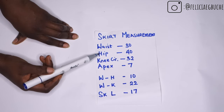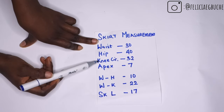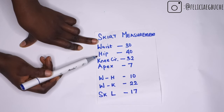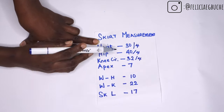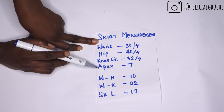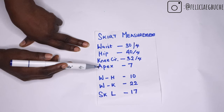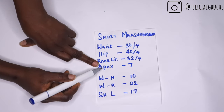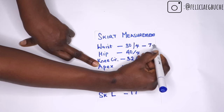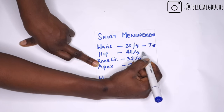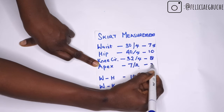The first three measurements go around the body, so we're going to be dividing those by four — those are your waist circumference, hip circumference, and knee circumference. The apex measurement, which is your nipple-to-nipple, we're going to be dividing that by two since it just goes from one nipple to the other. So this becomes 7.5 inches, this becomes 10 inches, this becomes 8 inches, while this becomes 3.5 inches.